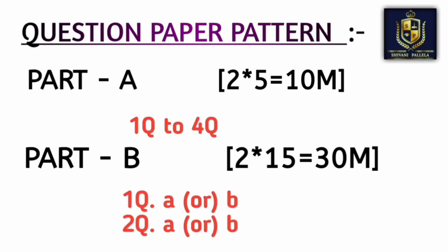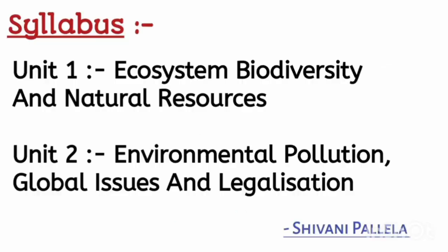Coming to the question paper pattern: in Part A they will give four questions, you need to attempt any two. The first and second questions will come from unit one, and the third and fourth from unit two. Each question carries five marks, and for five marks a minimum of one page answer is compulsory. In Part B, you need to attempt two questions, each carrying 15 marks - you need to write front, back, and front, which is three sides compulsory.